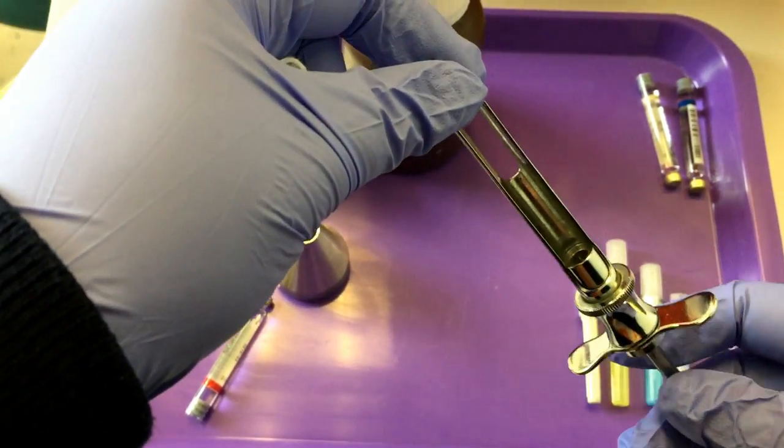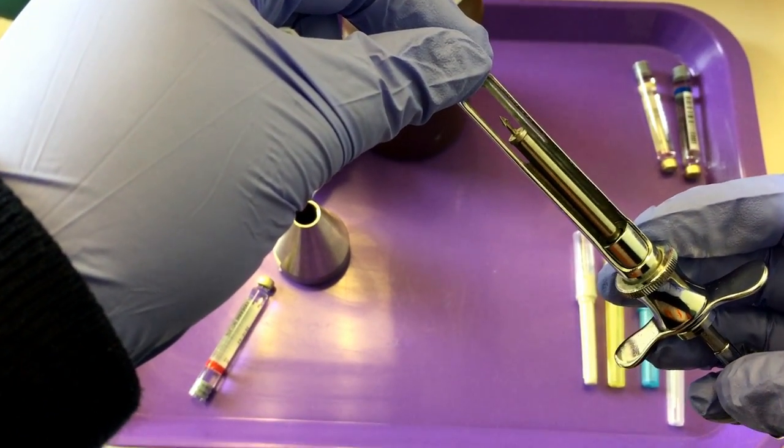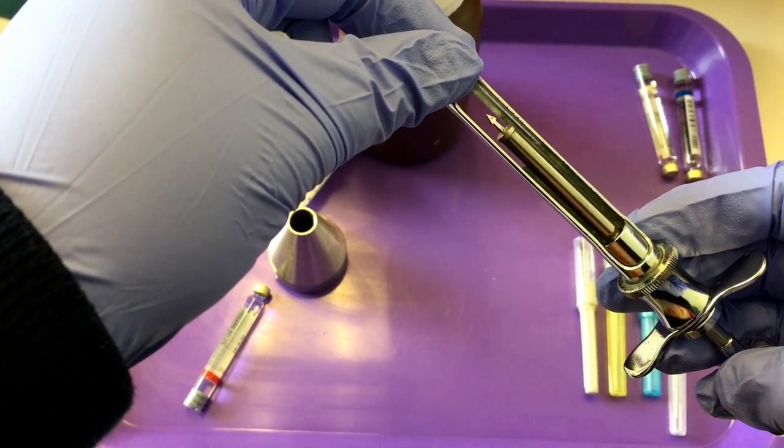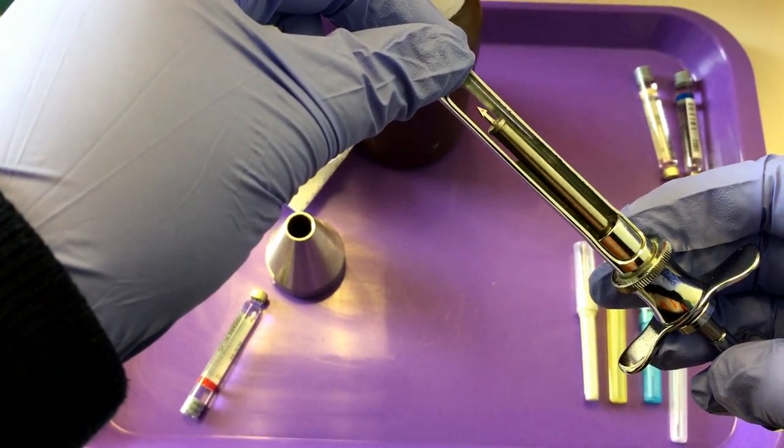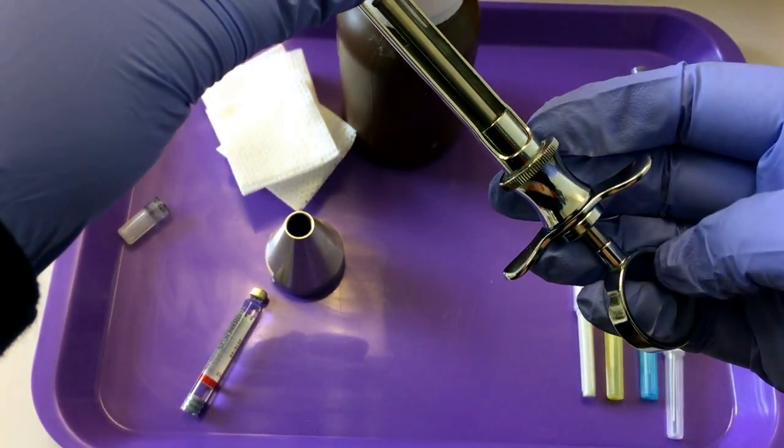This is called an aspirating syringe. If you notice the harpoon, this little arrow-shaped pointed end, that's what's going to stick into the rubber stopper, and we have to engage that by tapping on the thumb ring.